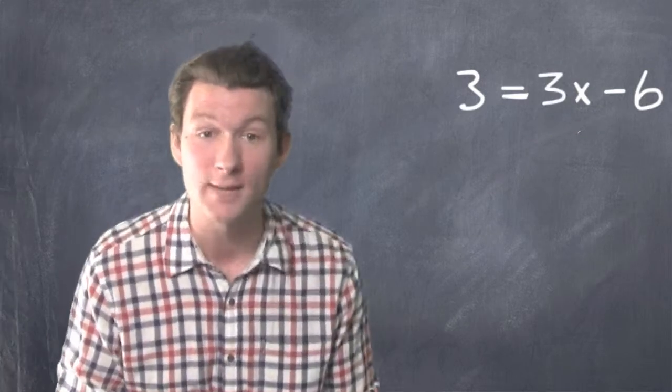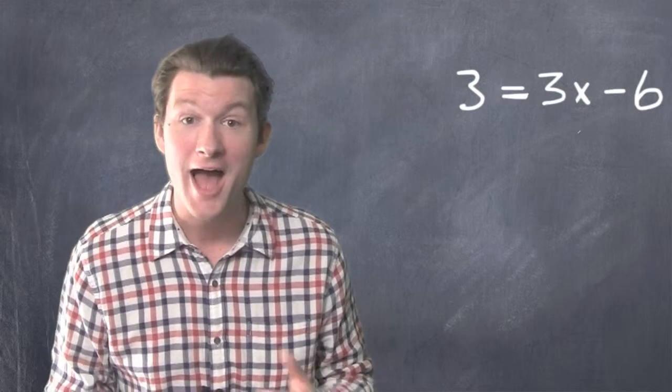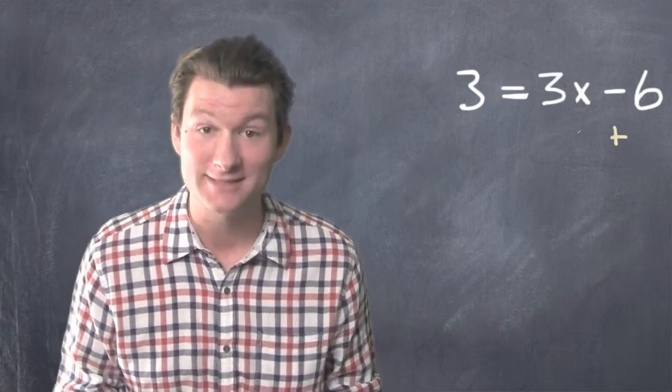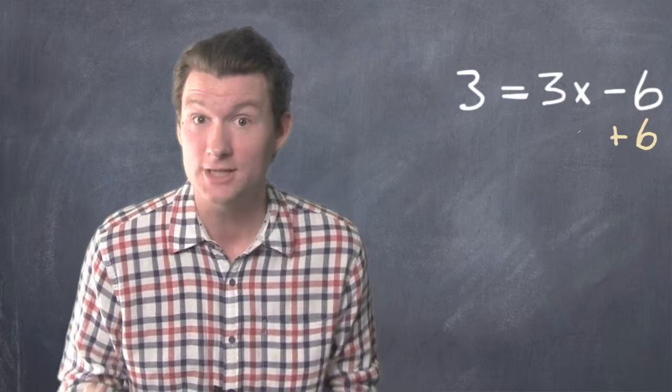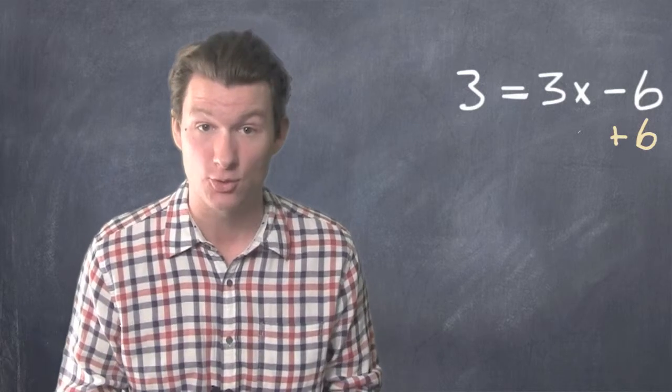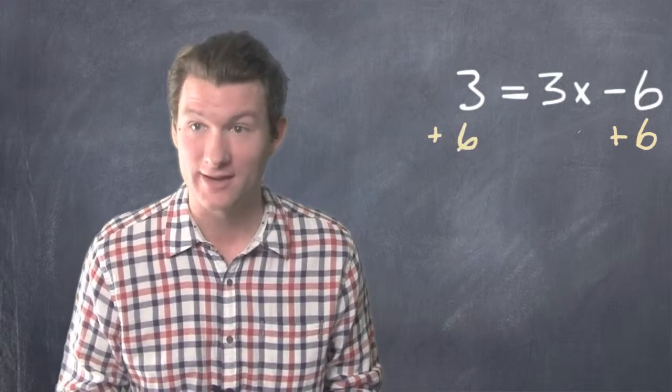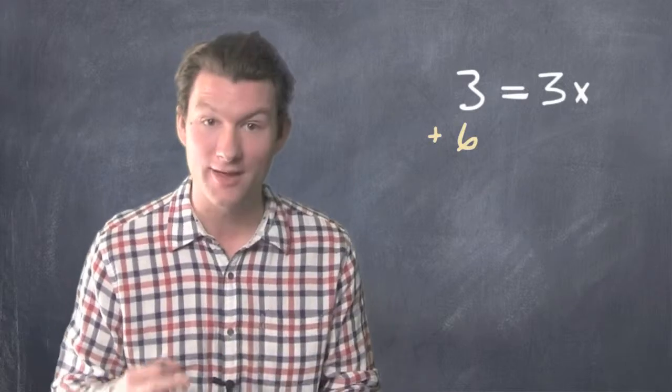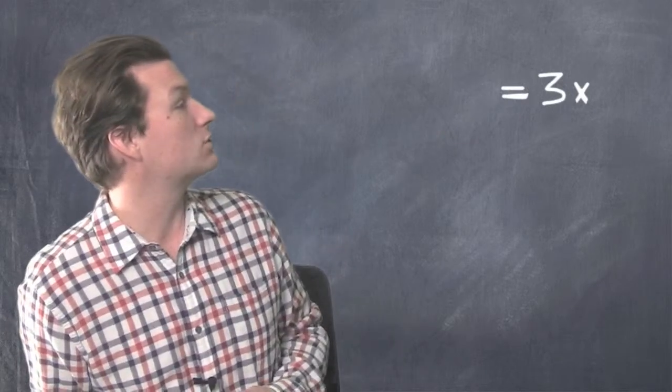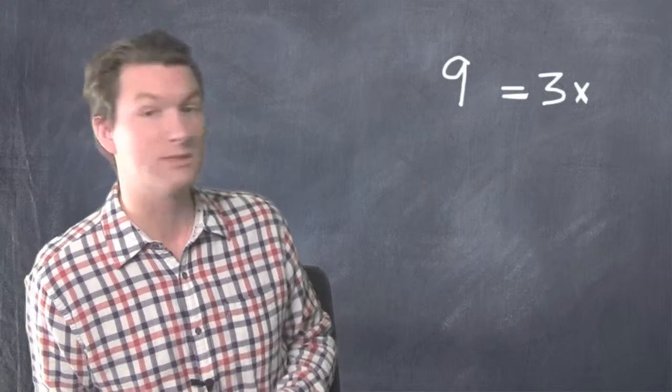Alright, all the x's are on the right side, but you see this minus 6 on the right side? He doesn't belong there. How do we get rid of minus 6? Well, the inverse of subtraction is addition. So we add 6 to the right side and to the left side. See, whatever you do on one side, you got to do to the other. So the 6 disappears from the right side and now what we have is 3 plus 6 equals 9.